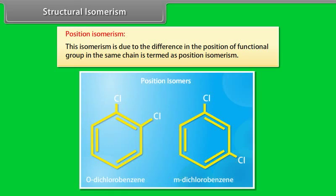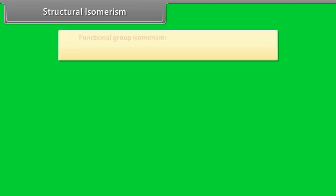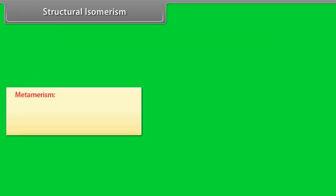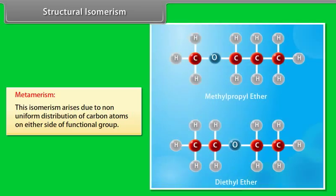Position isomerism is due to the difference in the position of a functional group in the same chain. Functional group isomerism occurs when compounds have the same molecular formula but different functional groups. Metamerism arises due to non-uniform distribution of carbon atoms on either side of the functional group.